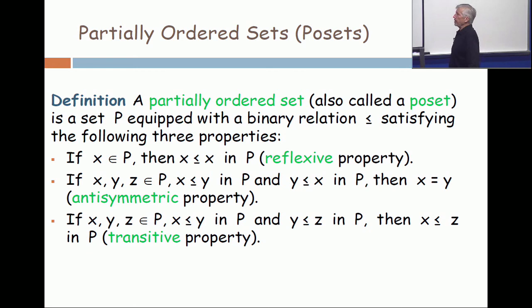The third property is called the transitive property. And when you have three elements, X, Y, and Z, if you have X less equal to Y, and you have Y less equal to Z, then you have X less equal to Z. So reflexive, anti-symmetric, and transitive.